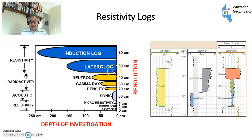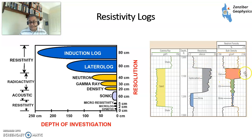The resistivity logs have a depth of investigation of up to two meters, but a resolution of about 80 centimeters, which becomes a problem in thin beds. On the log interpretation: the gamma ray log is a shale indicator showing where the sand is. The neutron-density crossplot shows big separation for gas, narrow separation for oil, and the curves are nearly on top of each other for brine or water. So if you have a kick in the resistivity log alongside sand, you may well have hydrocarbons.